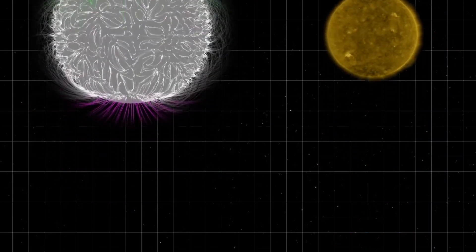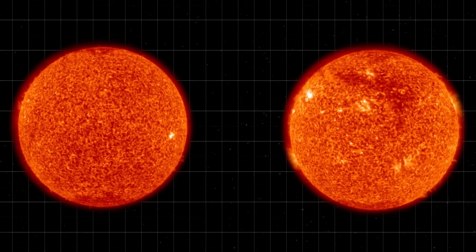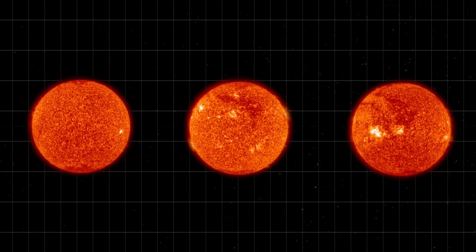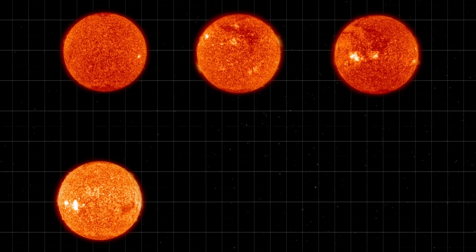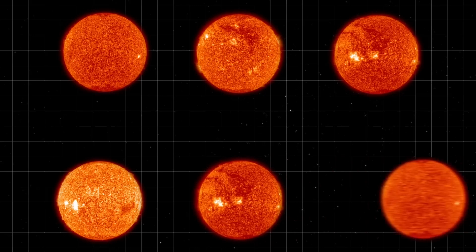One key aspect of this process is differential rotation. Unlike a solid object, different parts of the sun rotate at different speeds. The equator spins faster than the poles, causing magnetic field lines to twist and tangle. As these lines stretch and become more entangled, they begin to weaken and collapse, leading to the eventual pole reversal.